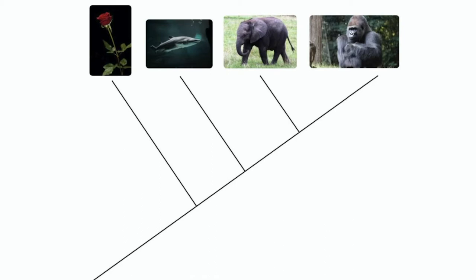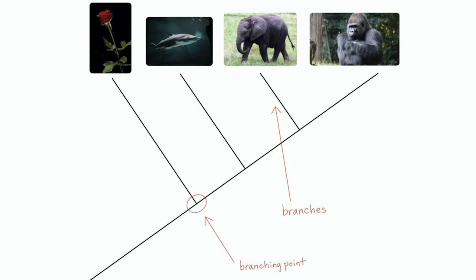It's used to make hypotheses on the relationships between different organisms, also known as living things. Like most trees, phylogenetic trees have branches and branching points. Each branch represents a different organism, and each branching point represents when organisms evolved or started becoming different from each other.